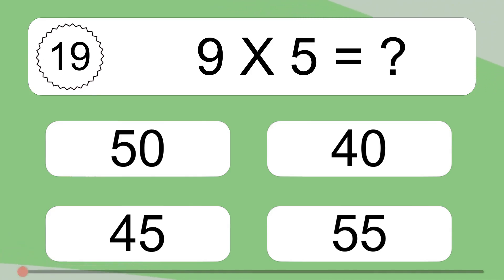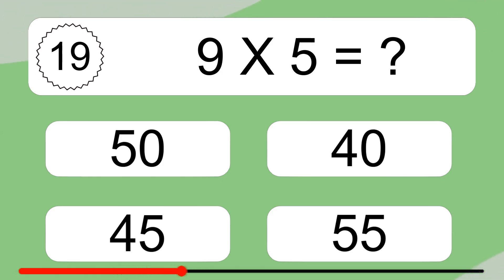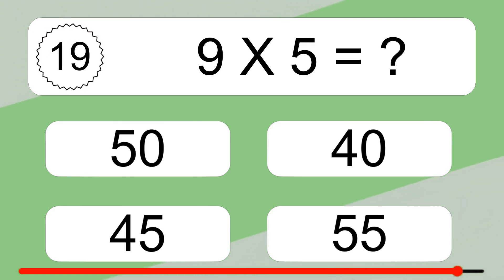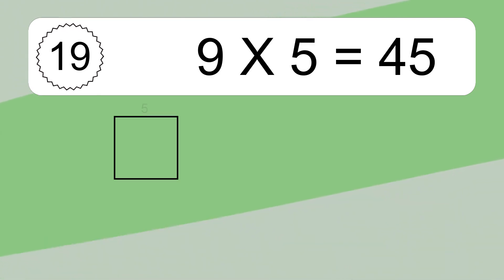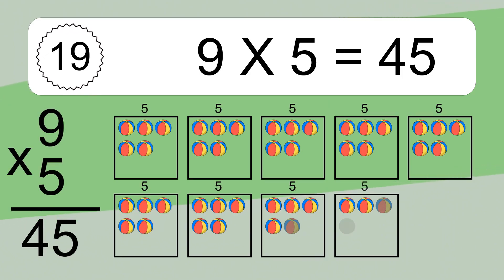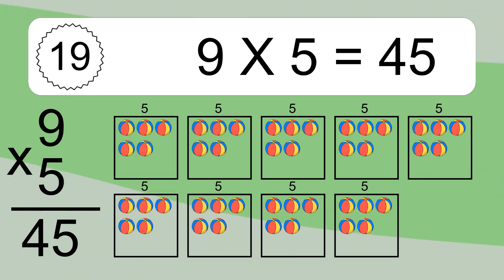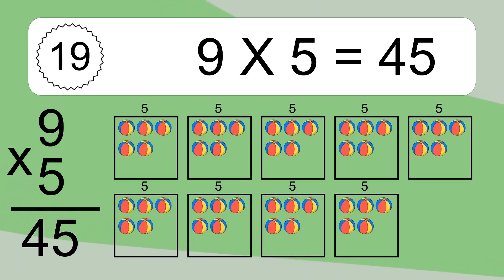Nine times five equals what? Nine times five equals 45. We have nine boxes and each box has five colorful balls inside. If you count all the balls in all the boxes together, you will have nine times five balls. This equals 45 balls.